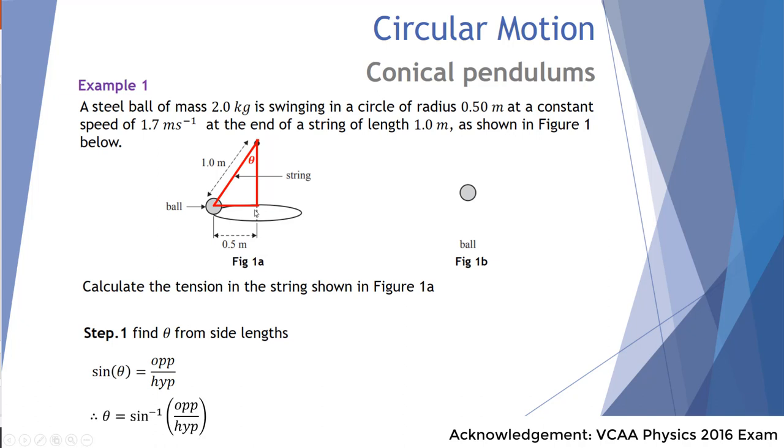So sine equals opposite over hypotenuse, therefore the theta, the angle, is inverse sine in brackets opposite over hypotenuse. We can submit our value of opposite is 0.5 of a metre and hypotenuse is 1 and the inverse of 0.5 is 30. So we now know that angle is 30 degrees. Now that we know the angle is 30 degrees we can use a simple trig function.